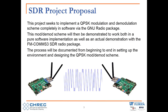The proposal of this project is to implement a QPSK modulation and demodulation scheme completely in software using GNU Radio. The scheme will be demonstrated first as a pure software implementation done locally on a computer, and then as an actual physical transmission scheme with the two devices, and the process will be documented.